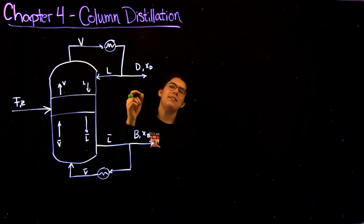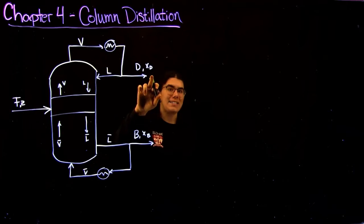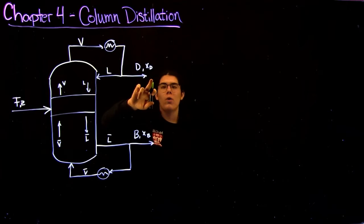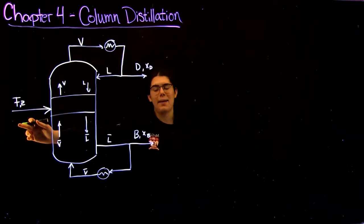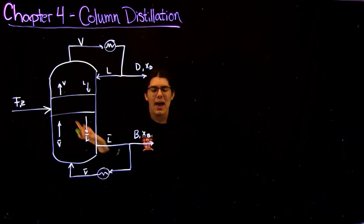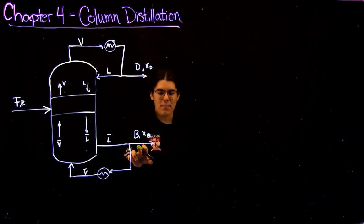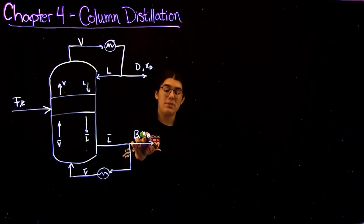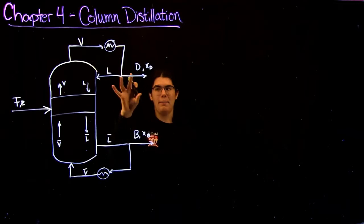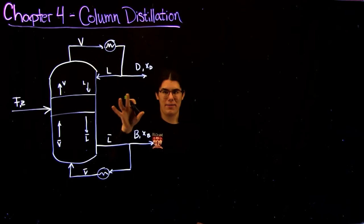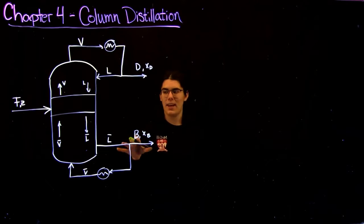Your distillate is usually mostly XD, your more volatile component that came in the feed. Out of your bottoms you have a very small XB coming out of that component, since most of it came out in the distillate.